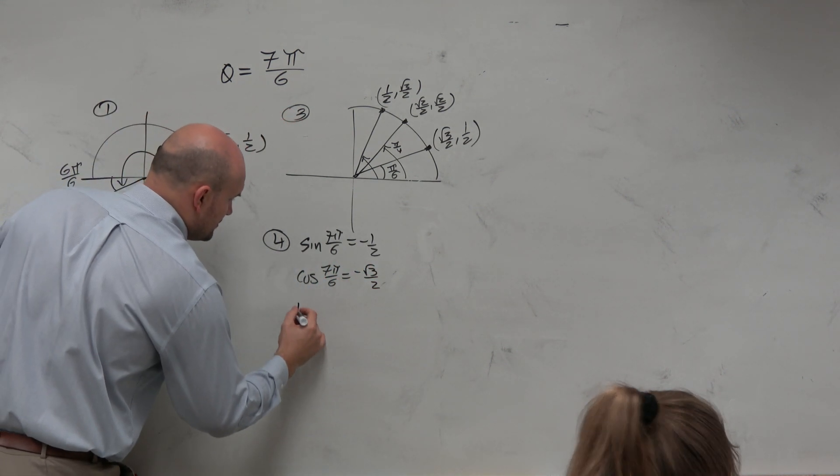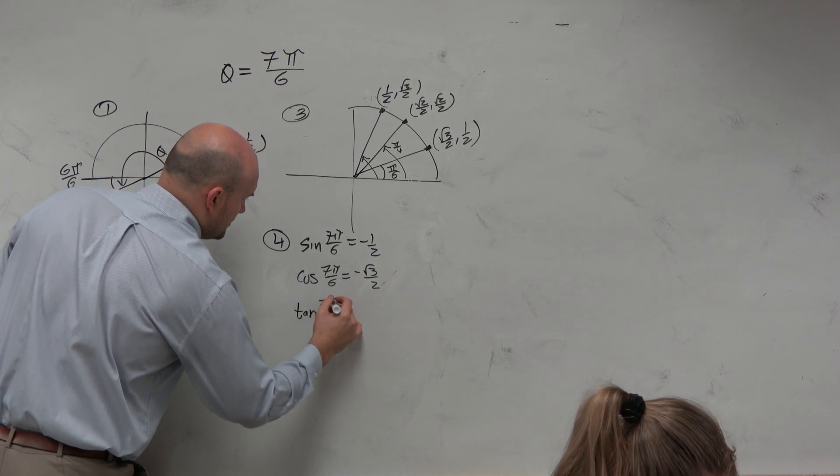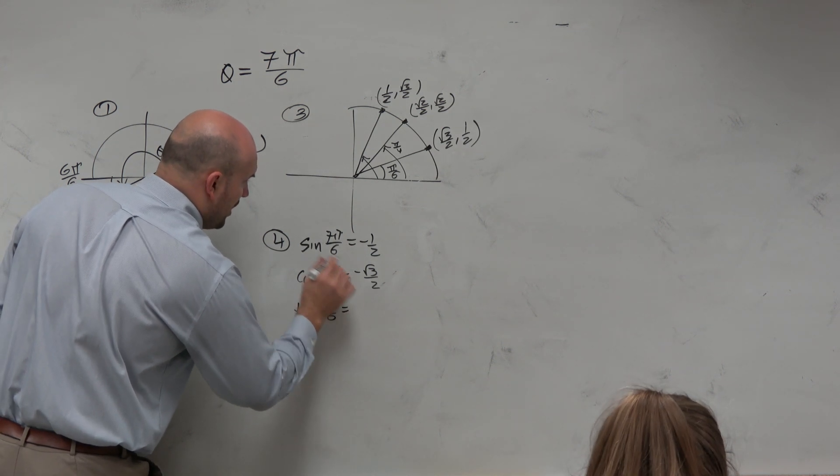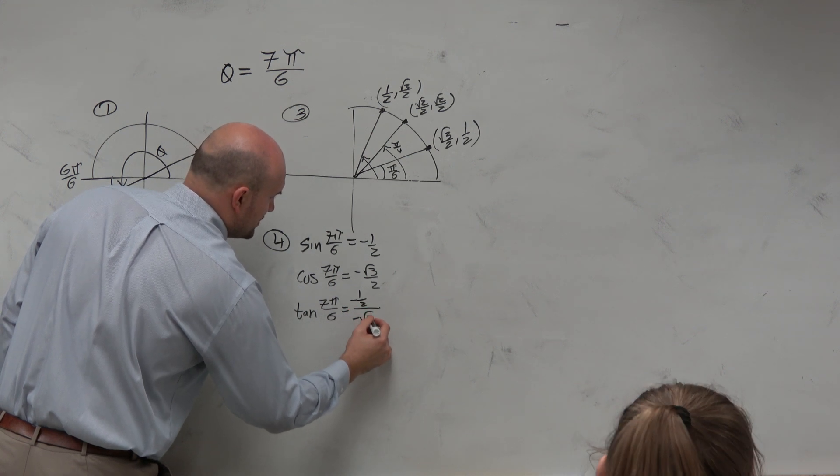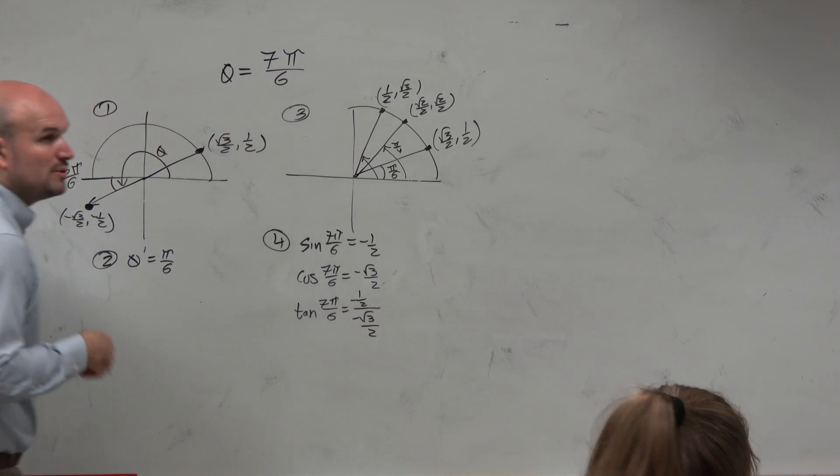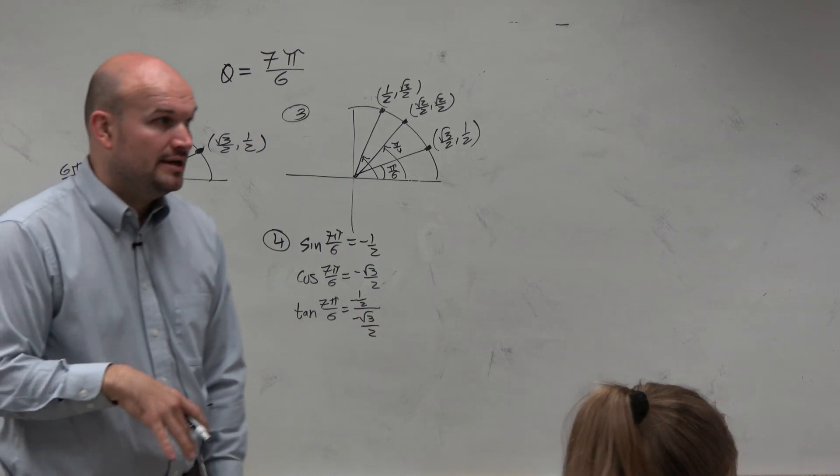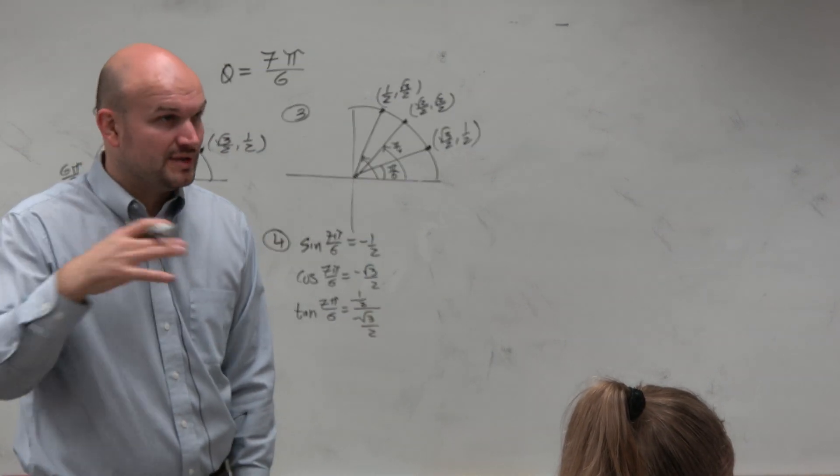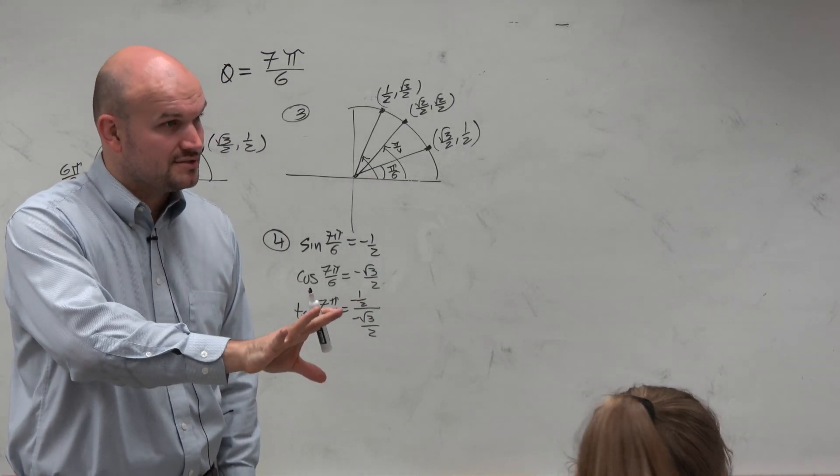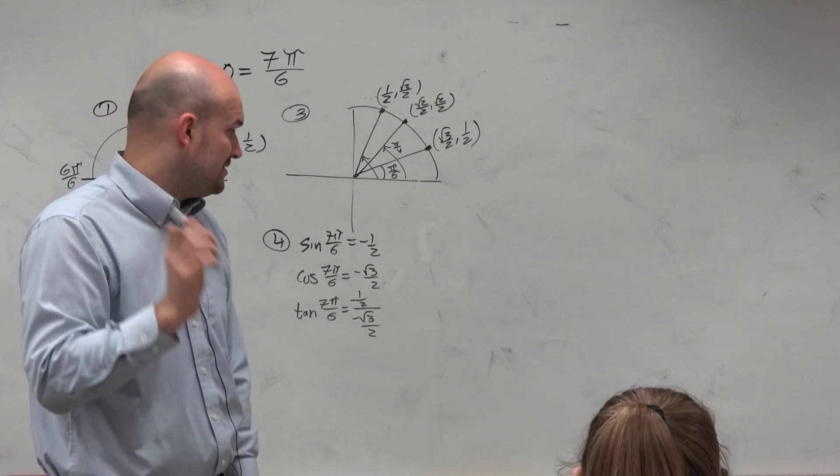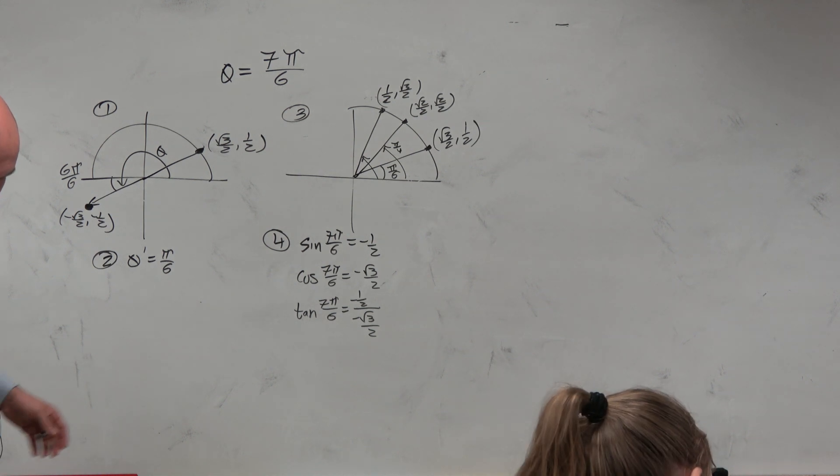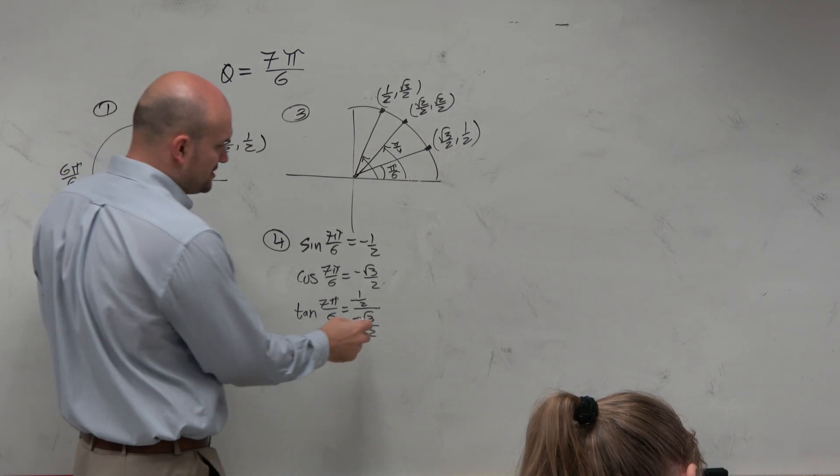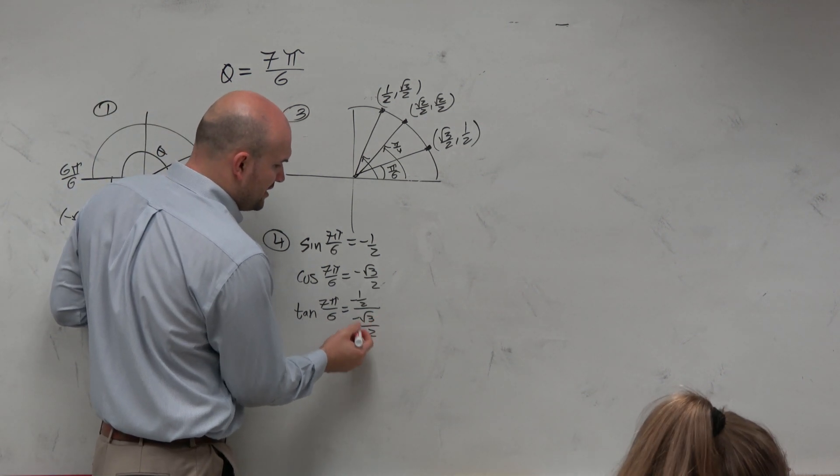And then tangent, which is always fun, is y over x. So negative 1 half divided by negative square root of 3 over 2. So we have a fraction divided by a fraction. And hopefully, my goal is for you guys to get to this point and already know what the answer is. But you're going to have to do this a couple times before you start seeing these patterns. When you have a fraction divided by a fraction, and you're on a test or quiz and you get confused, just remember you can always multiply by the reciprocal.